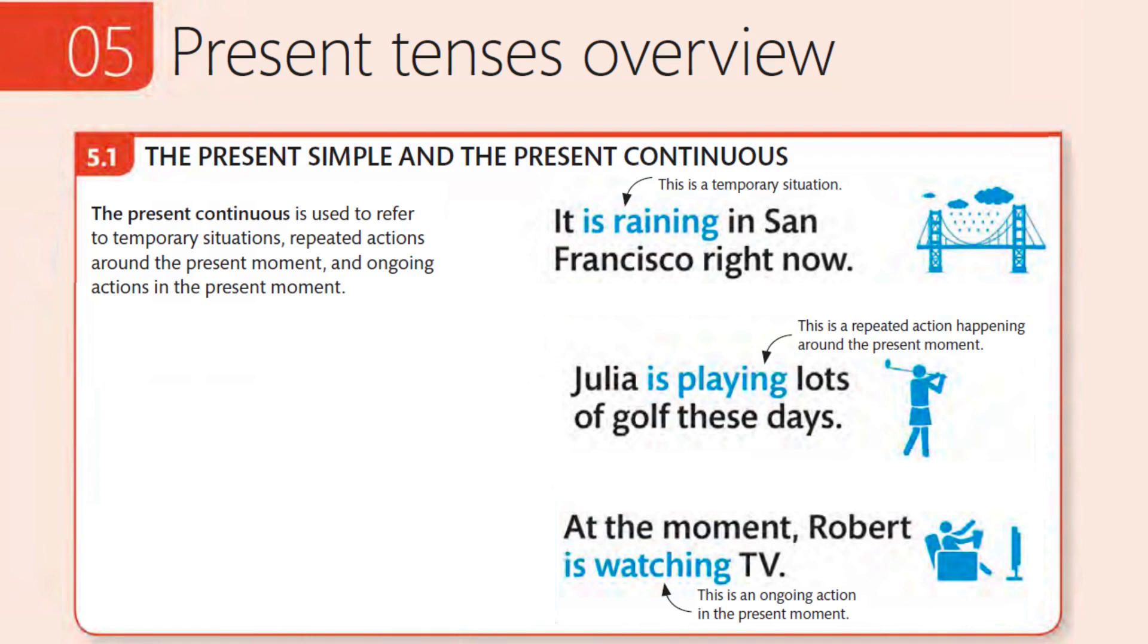It is raining in San Francisco right now. This is a temporary situation. Julia is playing lots of golf these days. This is a repeated action happening around the present moment. At the moment, Robert is watching TV. This is an ongoing action in the present moment.